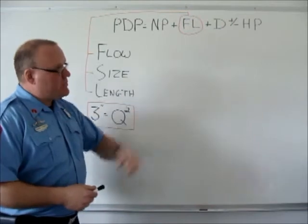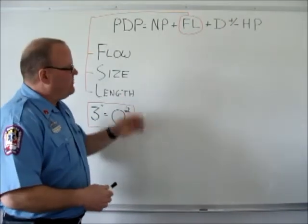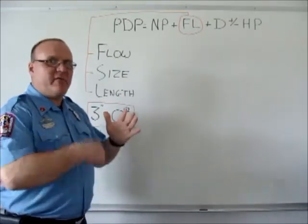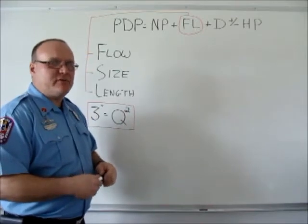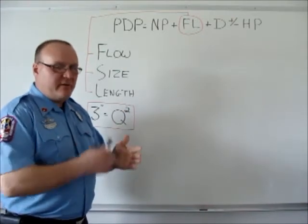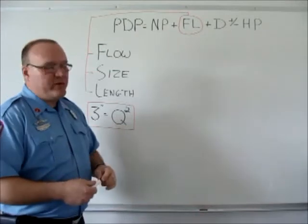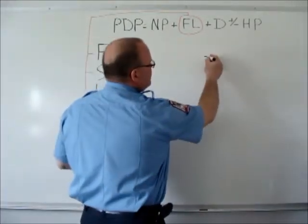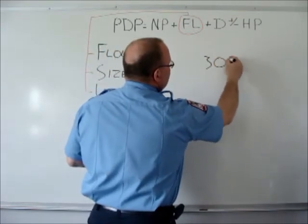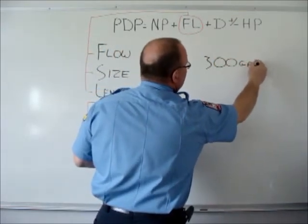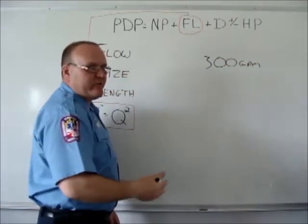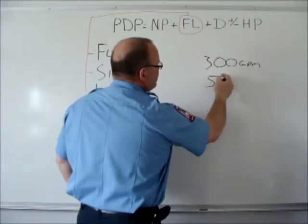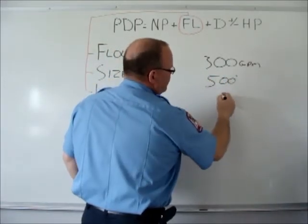We'll do a couple of examples here for three inch hose and then we'll show you how this translates to a hand method that a driver operator can use at 2 o'clock in the morning on a fire as a memory jogger. So the first example we'll use, we'll say 300 gallons a minute and we'll say that it's 500 feet of three inches.